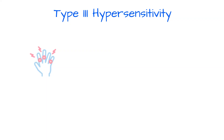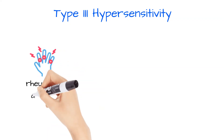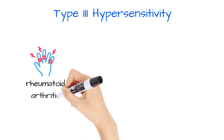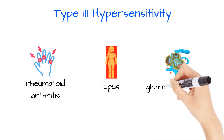Examples of type 3 hypersensitivity include rheumatoid arthritis, lupus, and glomerulonephritis.